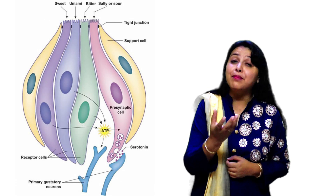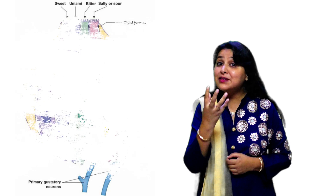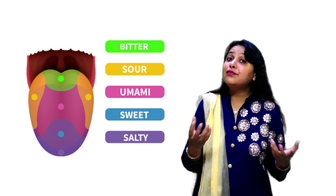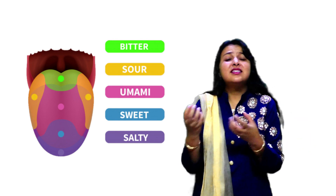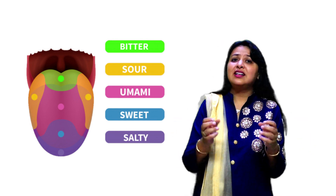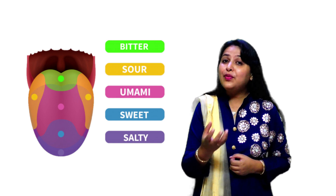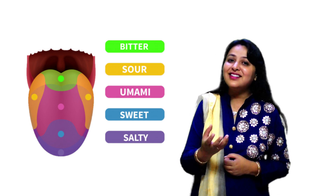The next part we are going to study is the tongue. The tongue has many small dots called taste buds, which are connected by nerves. They help us to taste the food — whether the food is sweet, sour, or bitter. We can taste all these flavors because of our tongue.